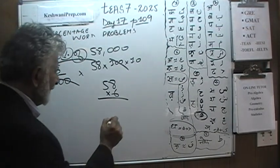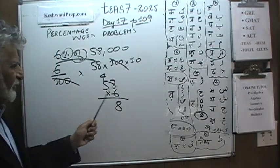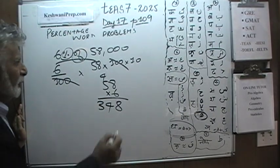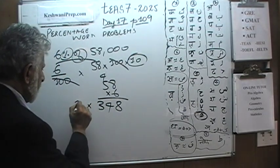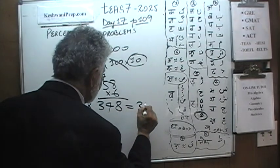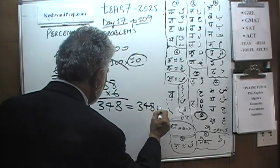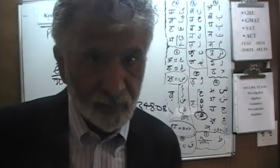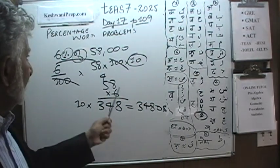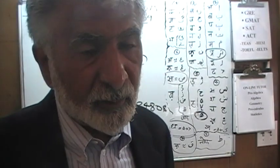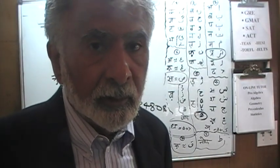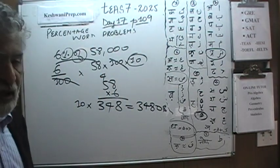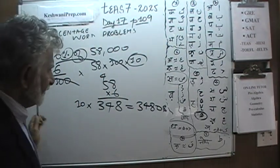Let's figure out what 58 times 6 is. 8 times 6 is 48. So that's 8 carry 4. 5 times 6 is 30. 30 plus 4 is 34. And now we have to multiply this amount by 10. That's going to give us 3,480. So that's the amount of money that she gets in commission because it represents 6% of 58,000. She sold $58,000 worth of cars.